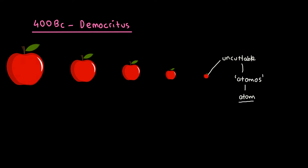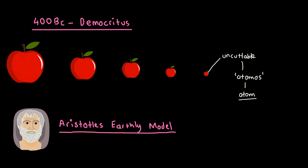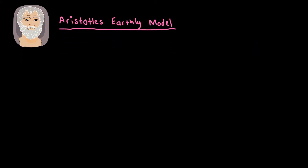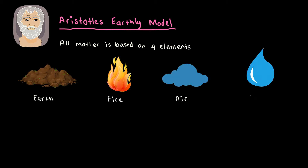This model was accepted for a while, until Aristotle came up with his own theory, called Aristotle's earthly model. He said that all matter is based on four elements: earth, fire, air, and water.